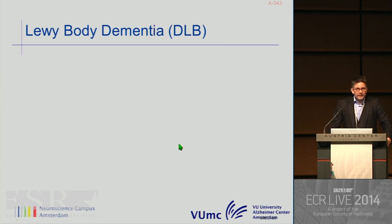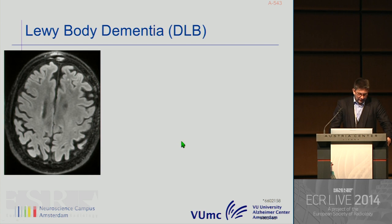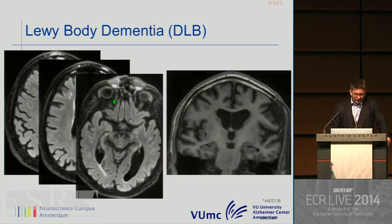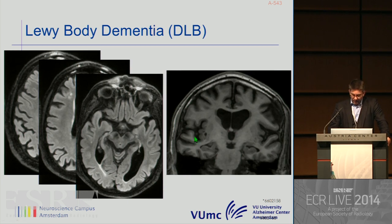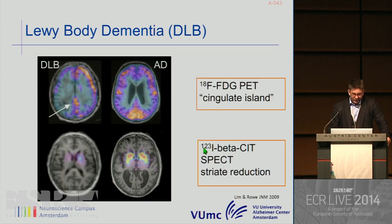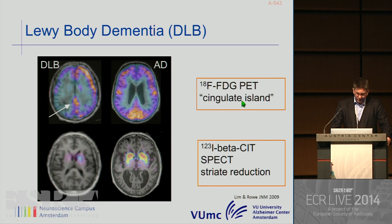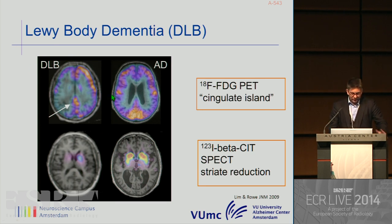DLB is another example where structural imaging has limitations. DLB patients show a rather unspecific pattern: a little bit of global cortical atrophy, a little bit of vascular comorbidity, and hippocampal atrophy that is rather mild. In these patients, we once again need additional neuroimaging findings—new methods like FDG-PET demonstrating the cingulate island sign, or SPECT examination focusing on the dopaminergic pathways.